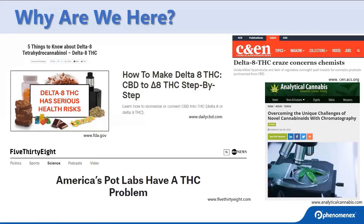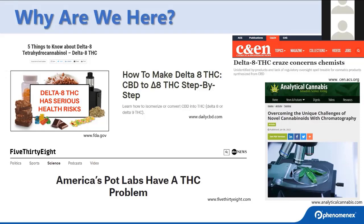Why are we here today? The testing market for cannabinoids is a very dynamic place, and it's evolving and maturing in very interesting ways. You've likely heard about Delta 8 THC over the last couple of years, as many publications have highlighted the challenges associated with this evolving market. In addition to Delta 8, there are a lot of unique cannabinoids that are coming out, changing the marketplace and the laboratory — how we test for potency, what analytes we look at, the dynamic range, and the types of matrices. This entire conversation is about how potency has evolved, where we are today, and some of the things we can do about it.